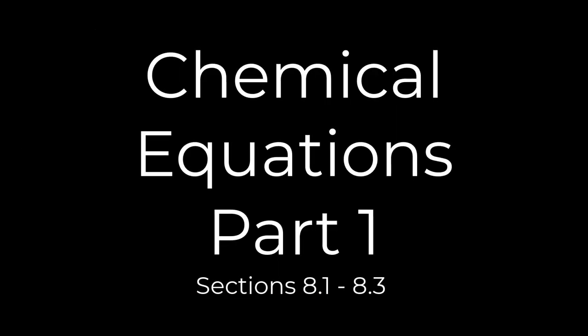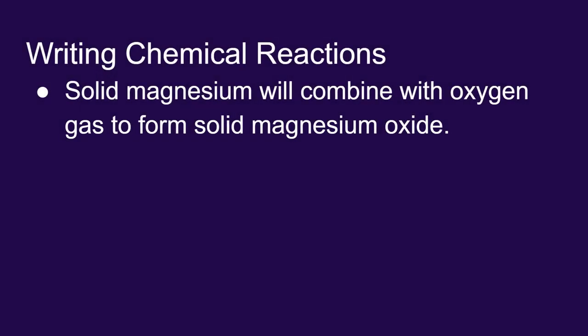Let's take a look at writing chemical reactions by starting with an example. You can react solid magnesium with oxygen gas and you'll form solid magnesium oxide.